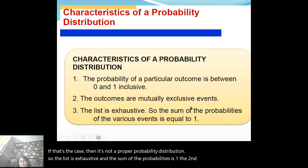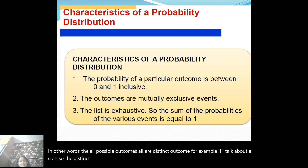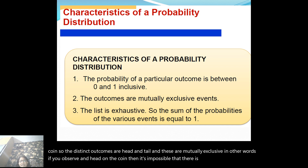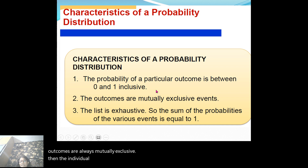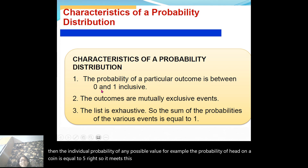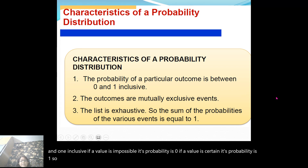The second point says the outcomes are mutually exclusive — all possible outcomes are distinct. For example, for a coin, the distinct outcomes are head and tail, and these are mutually exclusive: if you observe a head, it's impossible that there is a tail at the same time. In a probability distribution, outcomes are always mutually exclusive. Additionally, the individual probability of any possible value — such as the probability of head on a coin being 0.5 — must be between 0 and 1 inclusive. If a value is impossible its probability is 0; if certain, its probability is 1.